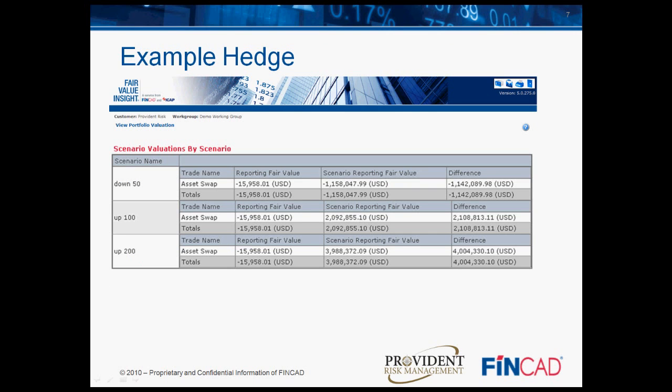We mentioned earlier four basic steps to building a hedge strategy. The fourth step was to analyze market risk. Here, we will stress test the swap to model changes in the fair value of the swap under different market conditions. We can see the changes in the value of the swap as rates go down 50 basis points, up 100 basis points, or up 200 basis points. For example, if rates move up 100 basis points, the market value of the swap will increase by $2.108 million. If rates go down by 50 basis points, the swap will lose $1.142 million in value.